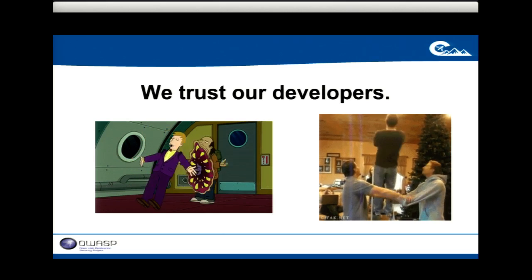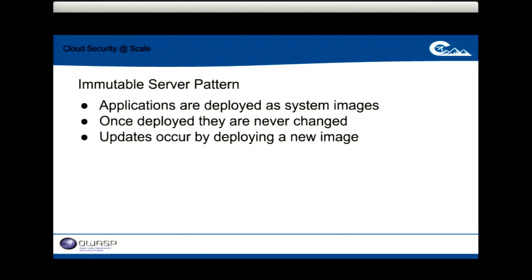Netflix uses an immutable server pattern. When we deploy something, we're deploying an image of an application. The image itself is never changed — if we need to update a library, the OS, or push out new code, that means making a new image. You can have old instances taking traffic alongside new ones with new features, slowly rotate traffic onto the new instances, and when you're confident in the new feature set, get rid of the old ones.